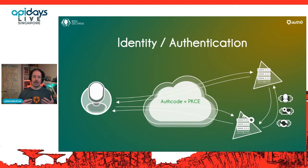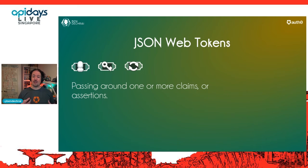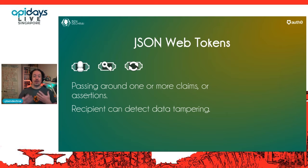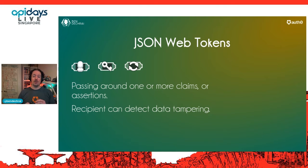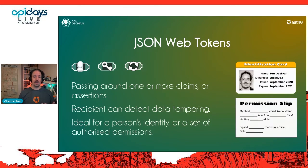This is where the tokens come into play. They're generally used for passing around one or more claims or assertions. So an ID token would have a claim that my name is Ben. There's also some kind of detection processing for tampering — when your application or API receives an access token, your system can verify that the token hasn't been tampered with without having to go back to the identity server. It's got a mechanism for self-validation. The ID token is useful for identity and the access token for an authorized set of permissions — think of them like a government-issued ID and a permission slip.